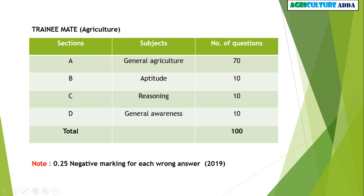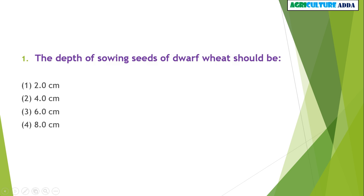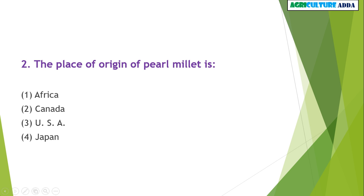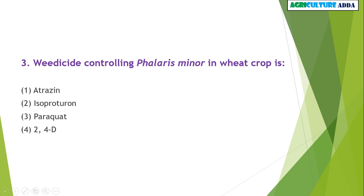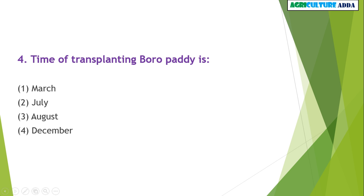Let's move on to the questions of 2018. The depth of sowing seeds of dwarf wheat should be 4 cm. The place of origin of pearl millet is Africa. The herbicide for controlling Phalaris minor in wheat crop is isoproturon. The time of transplanting boro paddy is December.